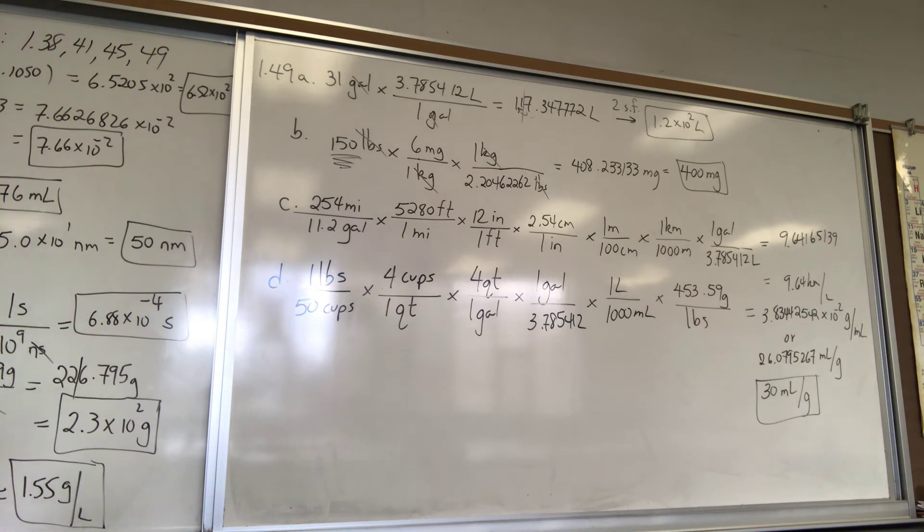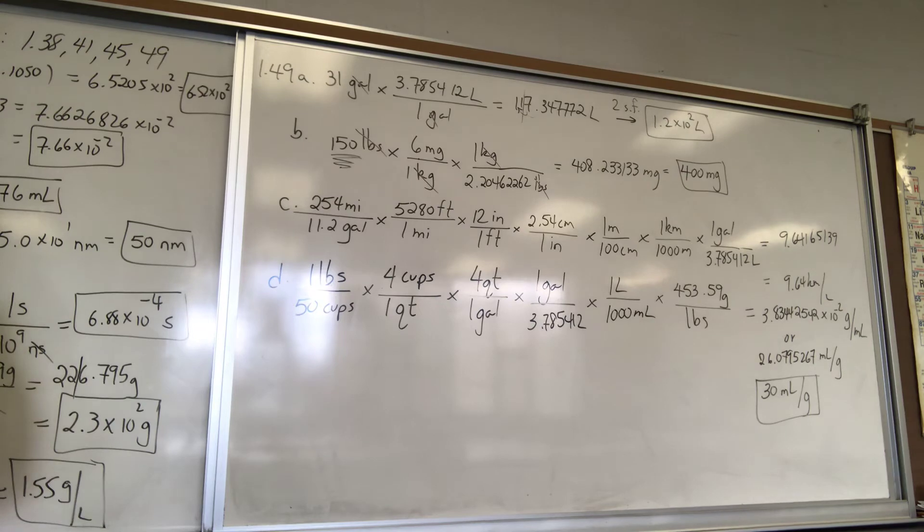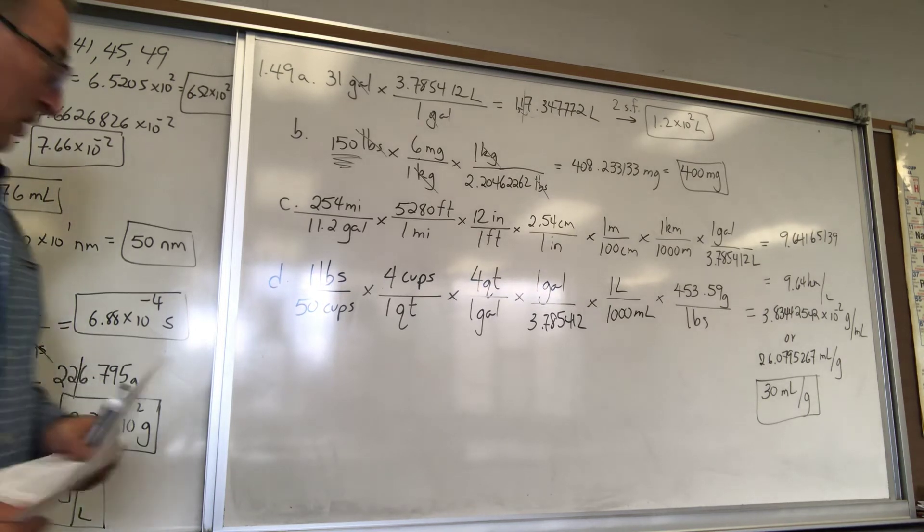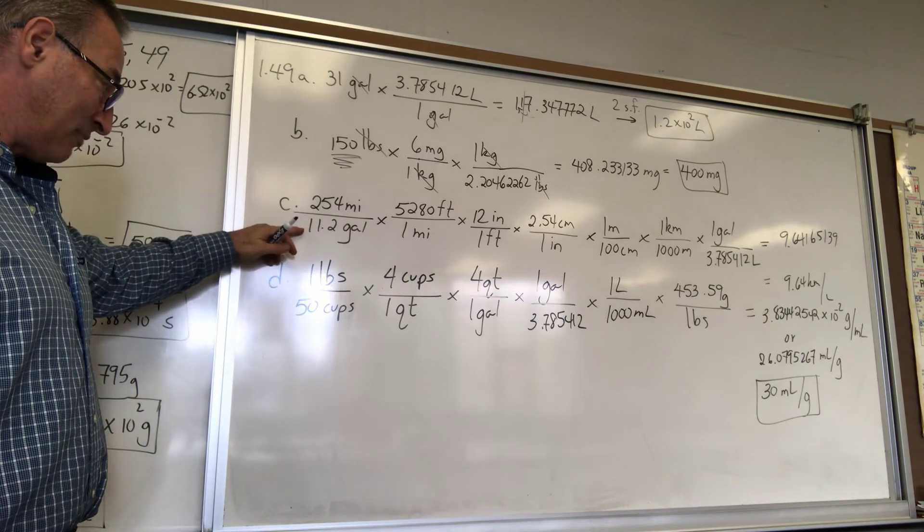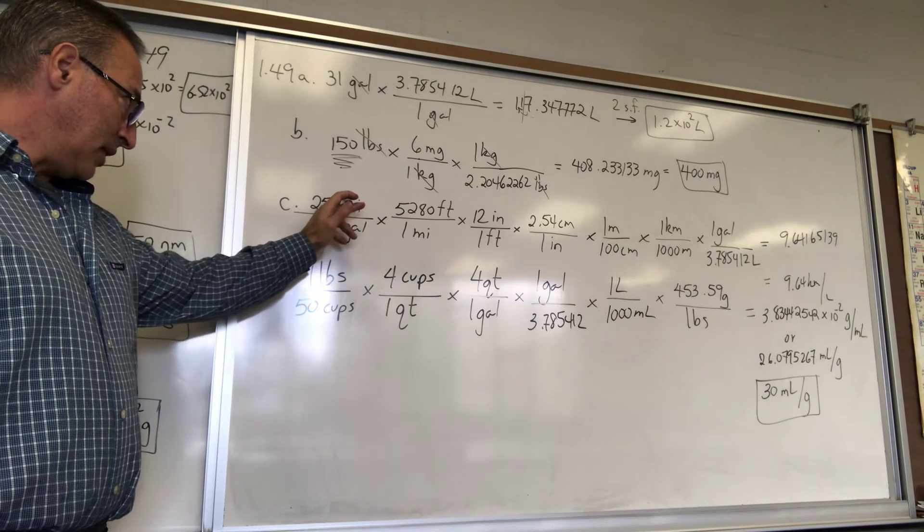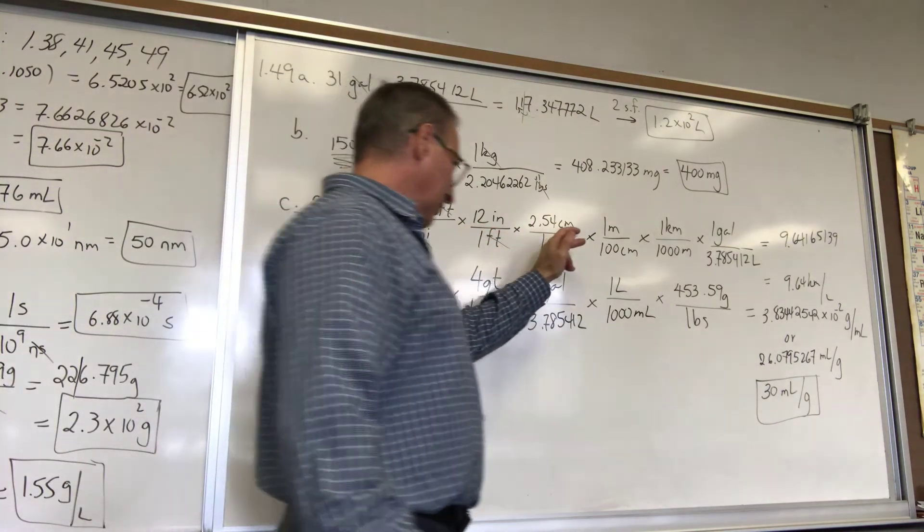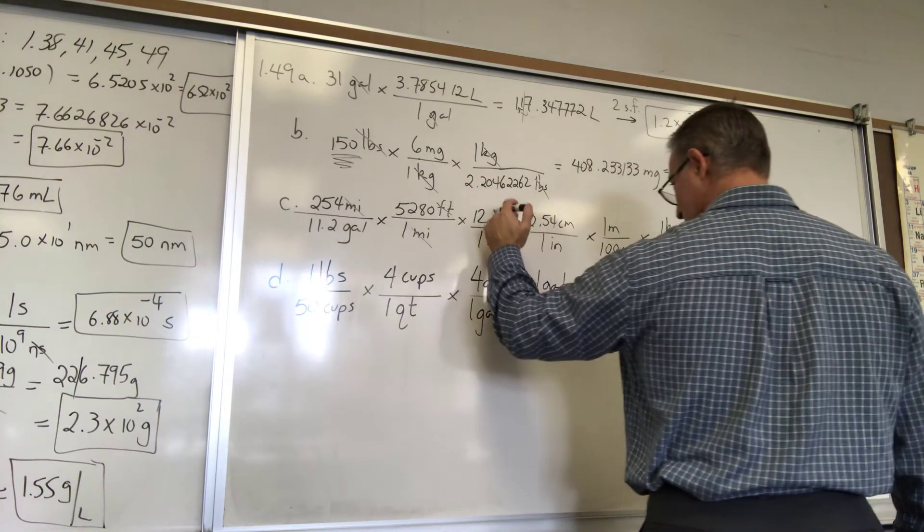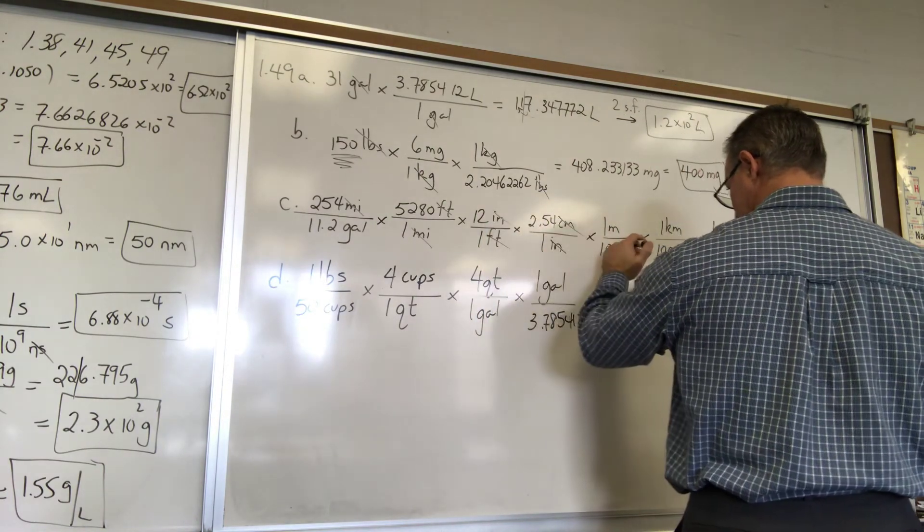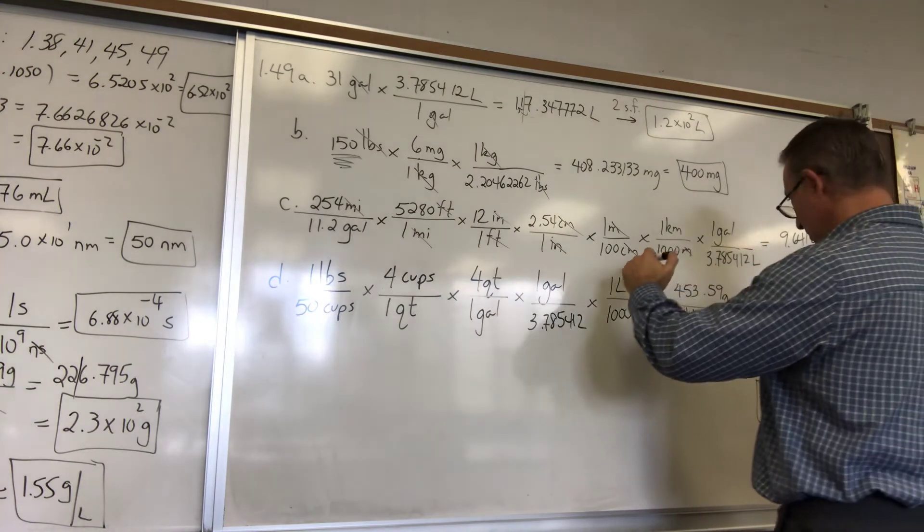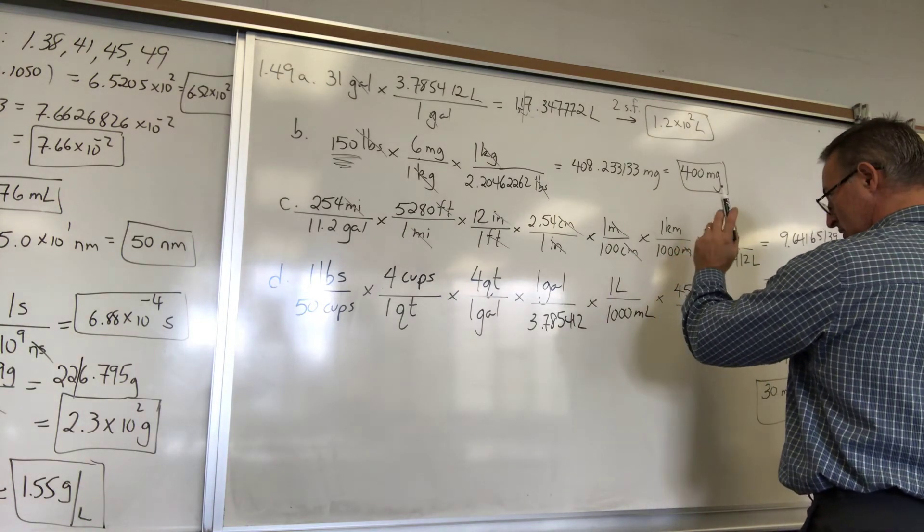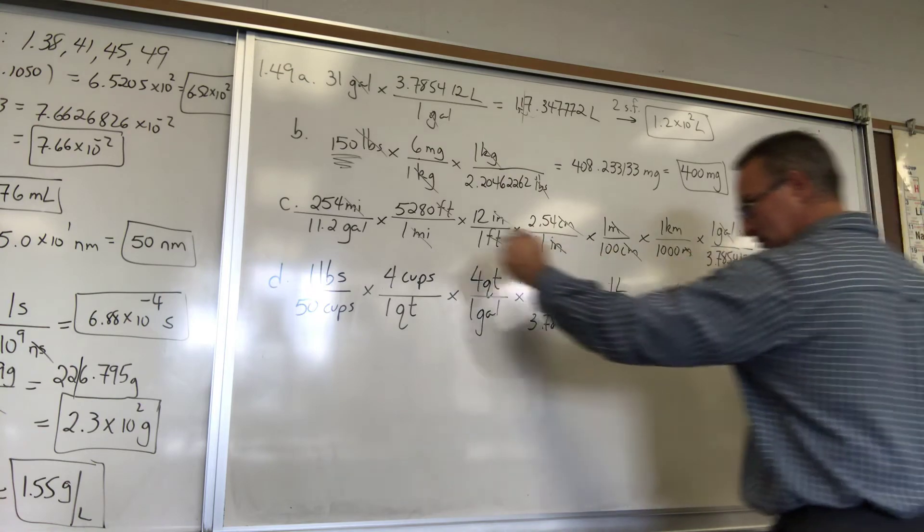Yeah, so 400 milligrams is the dose. And 49C, it says, if an automobile is able to travel 254 miles on 11.2 gallons of gasoline, what is the gas mileage in kilometers per liter? So you have 254 miles per 11.2 gallons. I'm getting rid of miles here, 5280 feet per mile. I'm getting rid of feet here, 12 inches per foot. I'm getting rid of inches over here. I'm getting rid of centimeters over here. I'm getting rid of meters. And where's the gallon? Gallons is also gone over here.